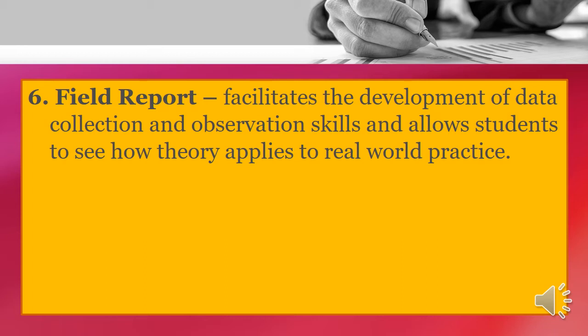When writing a field report, you need to consider two things. First, systematically observe and accurately record the details and information of a current aspect of a situation, then constantly analyze your observations for meaning. Second, keep the report's aim in mind while observing — consciously observe, record, and analyze what you hear and see in the context of a theoretical framework. Therefore, field report is about linking theory and practice. It also involves both description and analysis, and it is necessary to avoid presenting description without any analysis.